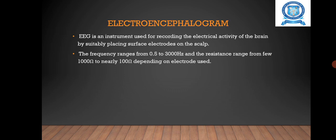EEG is an instrument used for recording the electrical activity of the brain by suitably placing surface electrodes on the scalp. Here the biological name of brain is encephalome. The frequency ranges from 0.5 to 3000 Hz and the resistance ranges from 5000 ohm to nearly 100 ohm depending on electrodes used.